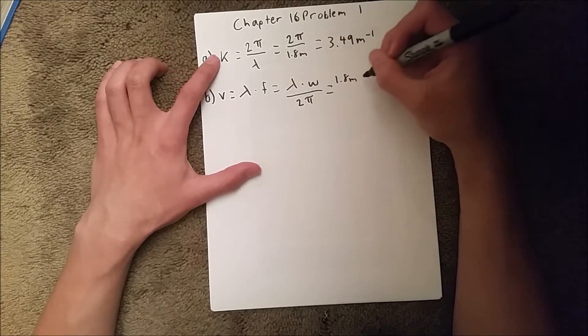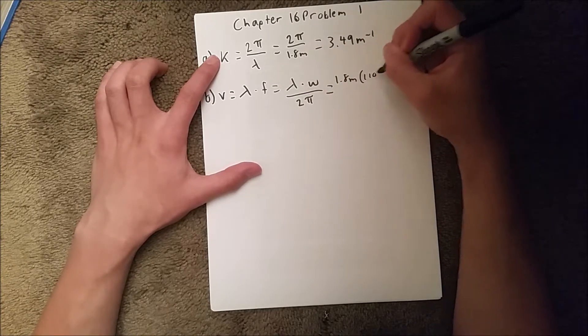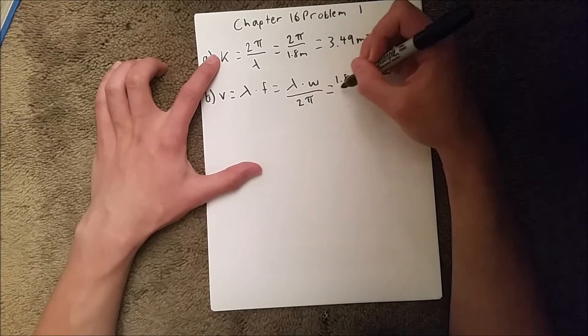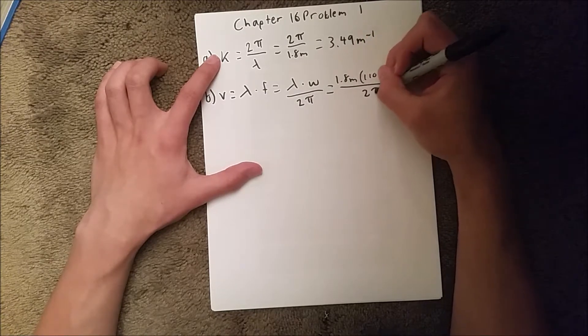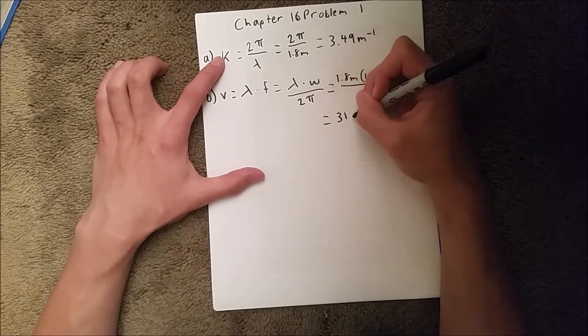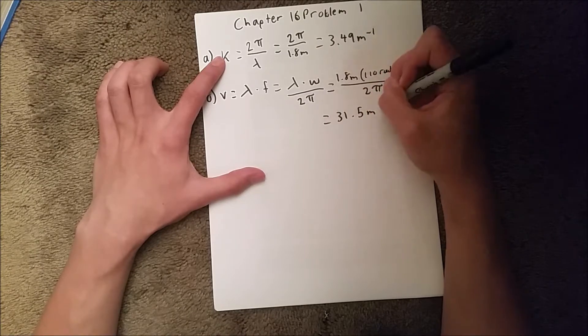We have 1.8 meters times 110 radians per second, all over 2π. And when you plug that in, you should get 31.5 meters per second.